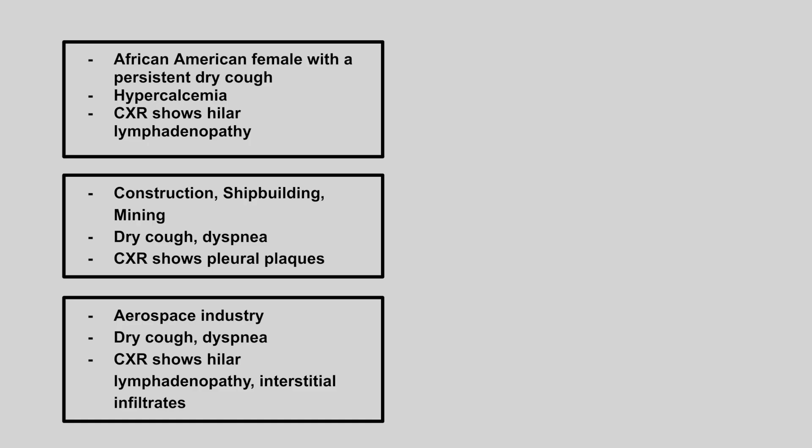Now we have an African-American female with a persistent dry cough, hypercalcemia, and chest x-ray shows hilar lymphadenopathy. This is sarcoidosis.